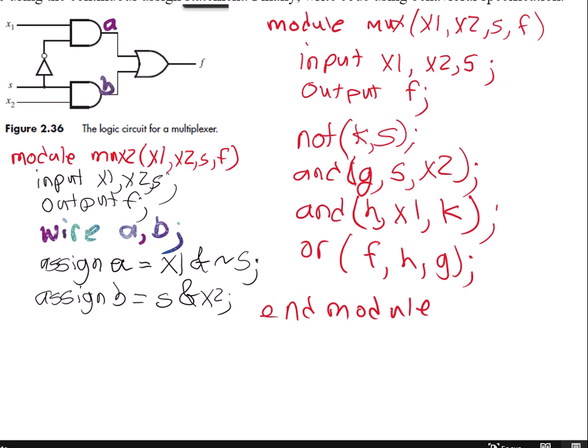And then I will assign F equals to A or B semicolon. And that's just the vertical line. And then I can end module.